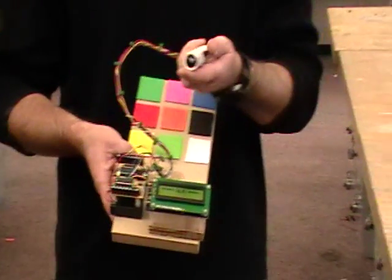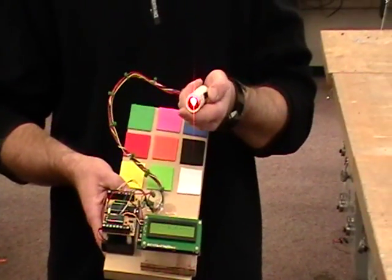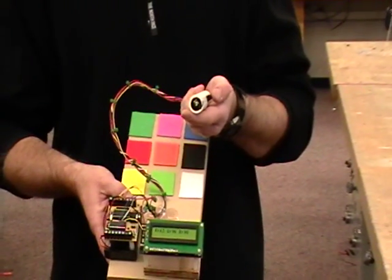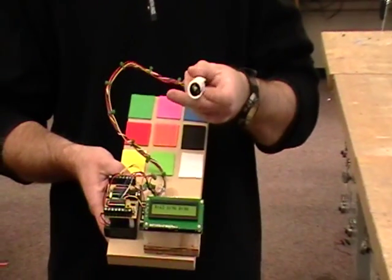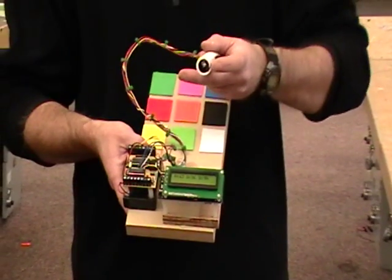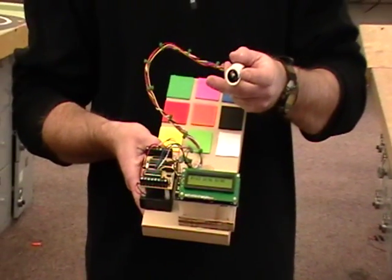Inside this tube we have an RGB LED. When I press it you'll see the different colors come on. It shoots red, green and blue light. We also have a light sensor, or more accurately a photoresistor inside of it, that'll read the reflection of each of those colors.